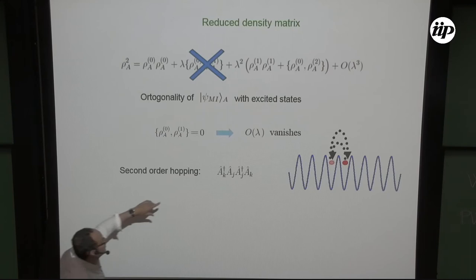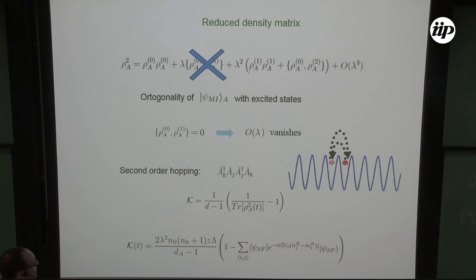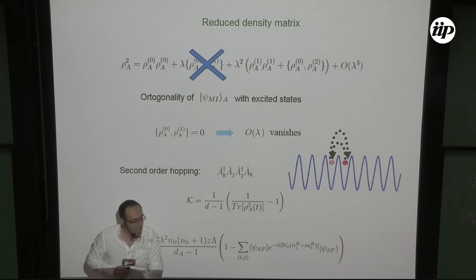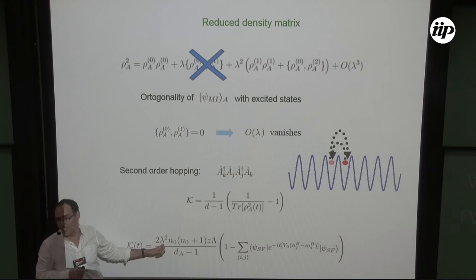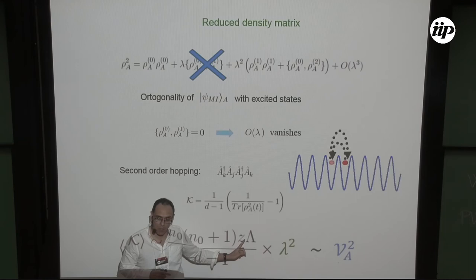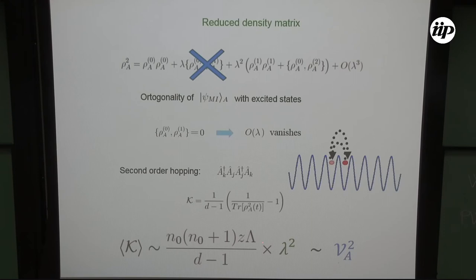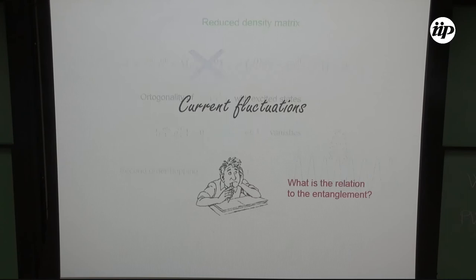At second-order hopping, we have processes where particles are taken from one site, placed in the nearest-neighbor well, and then returned. This leads to a beautiful expression for the mean entanglement in terms of the reduced density matrix, which already depends on lambda squared. After time-averaging, we obtain an expression that depends only on the integer filling, coordination number, number of lattice sites, and dimension. Since the visibility is proportional to J/U, we recover exactly the expression found in the numerical simulations.